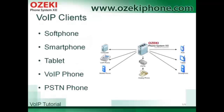As you could see, Ozeki Phone System XC can operate several client types. For example, you can connect your soft phone to your Ozeki Phone System XC — these are software solutions on your computer with a microphone and a speaker. You can use smartphones, tablets, and PDAs as well. Of course, you can also use the VoIP network with a hardware-based phone. You can connect IP phones or analog phones with an adapter. You can use Ozeki Phone System XC with all these types of clients.